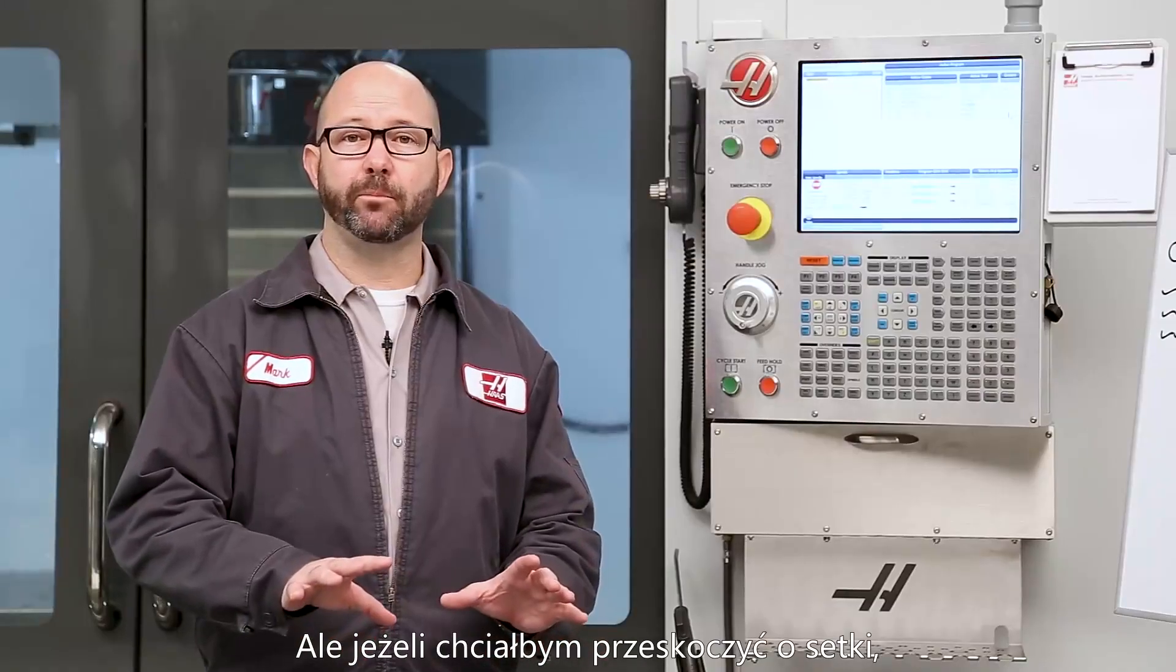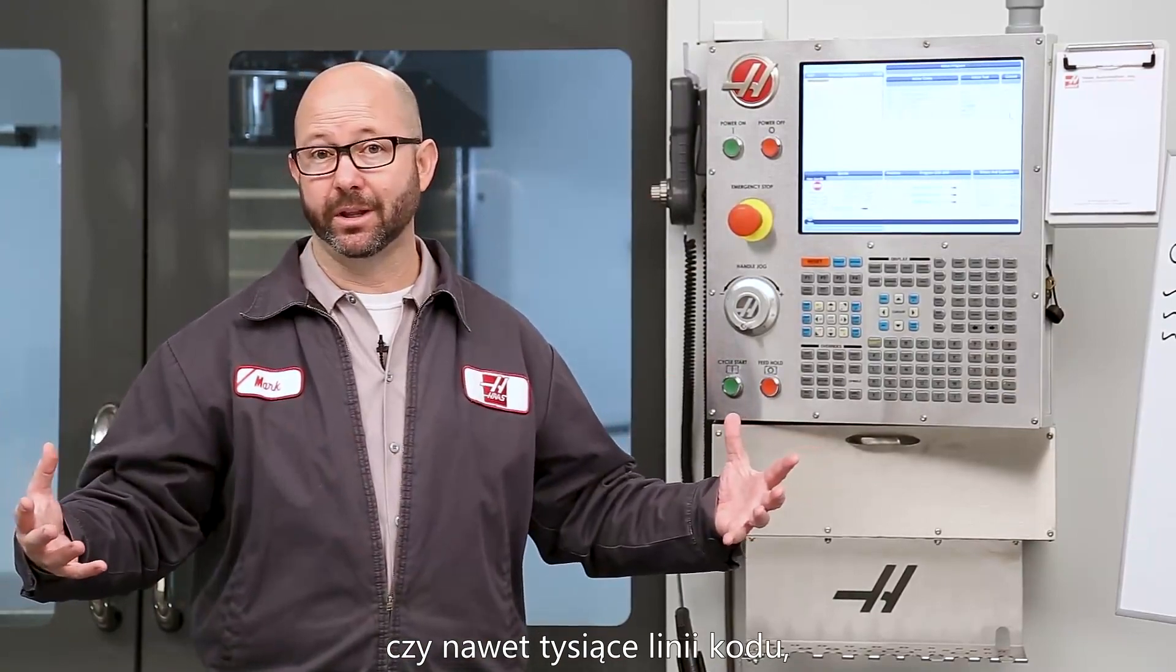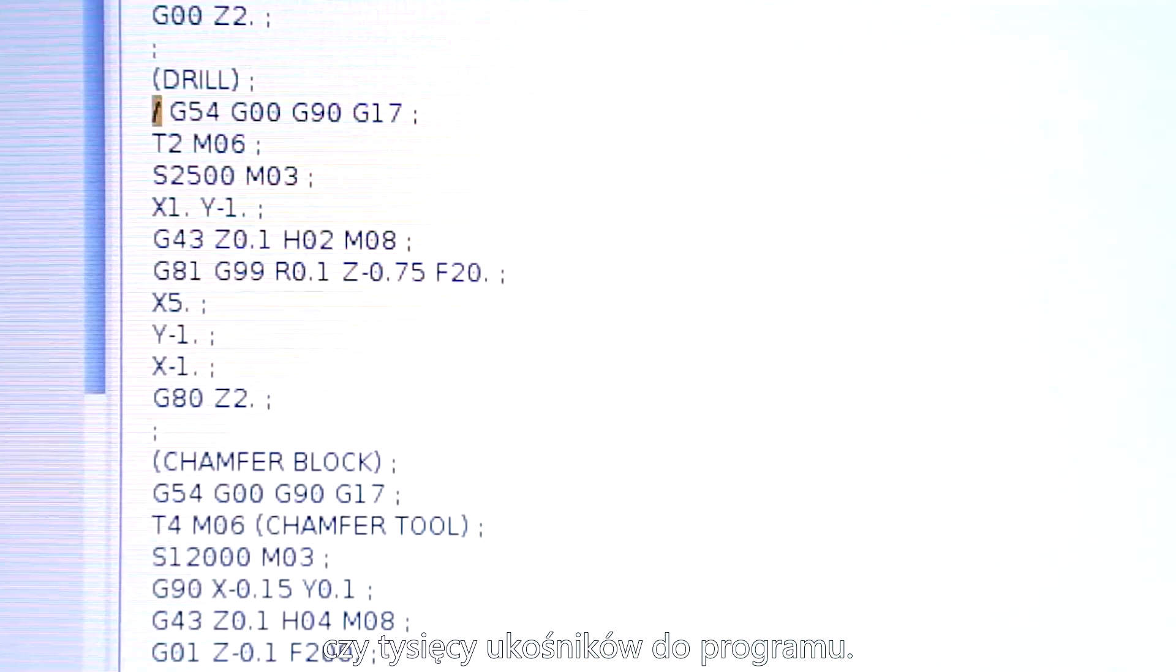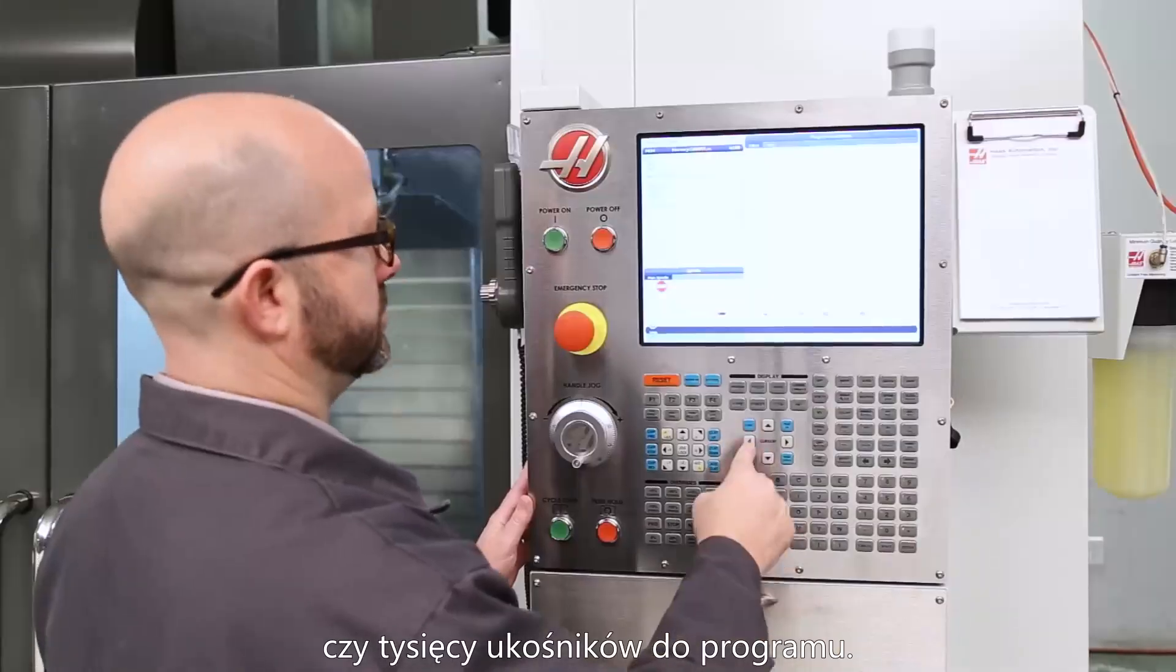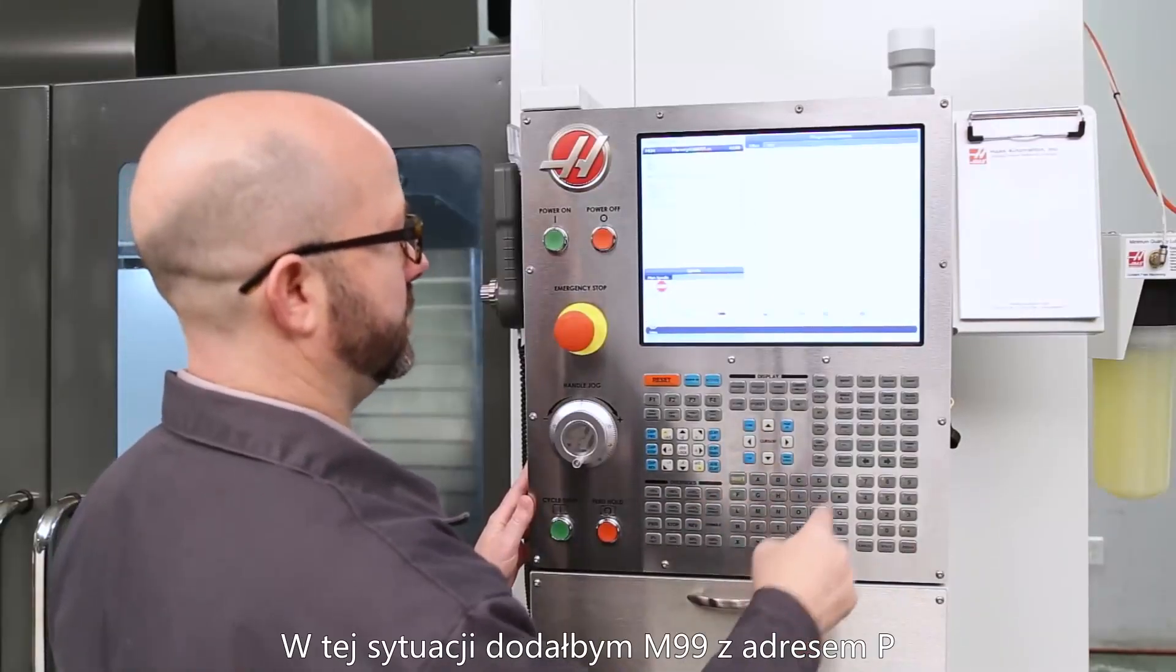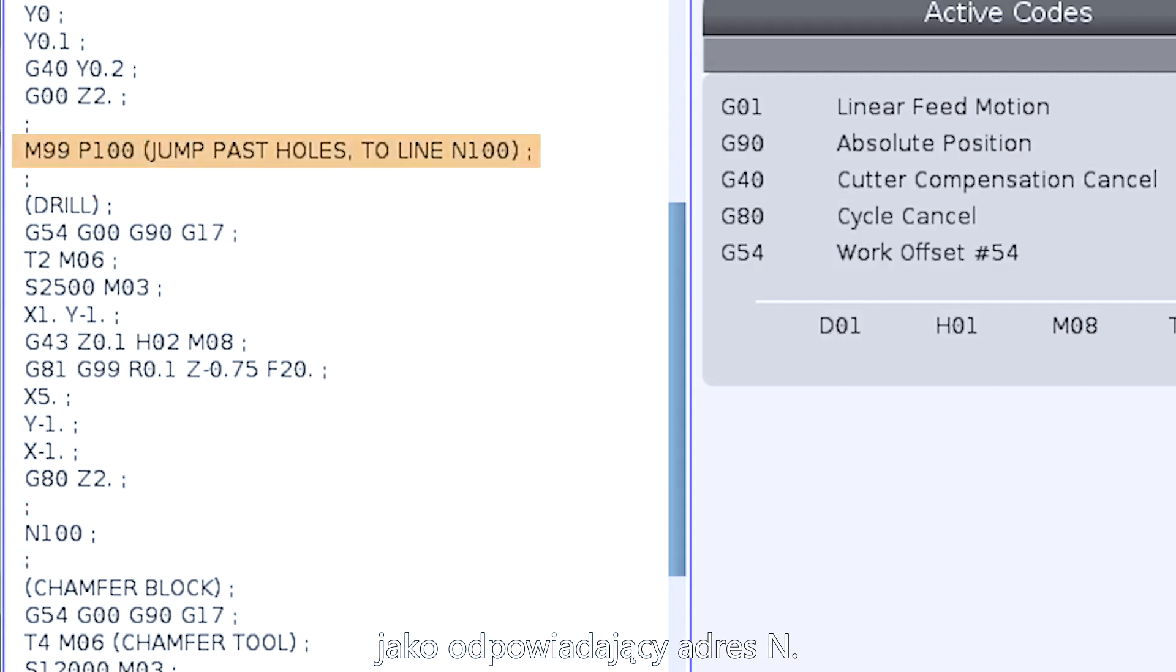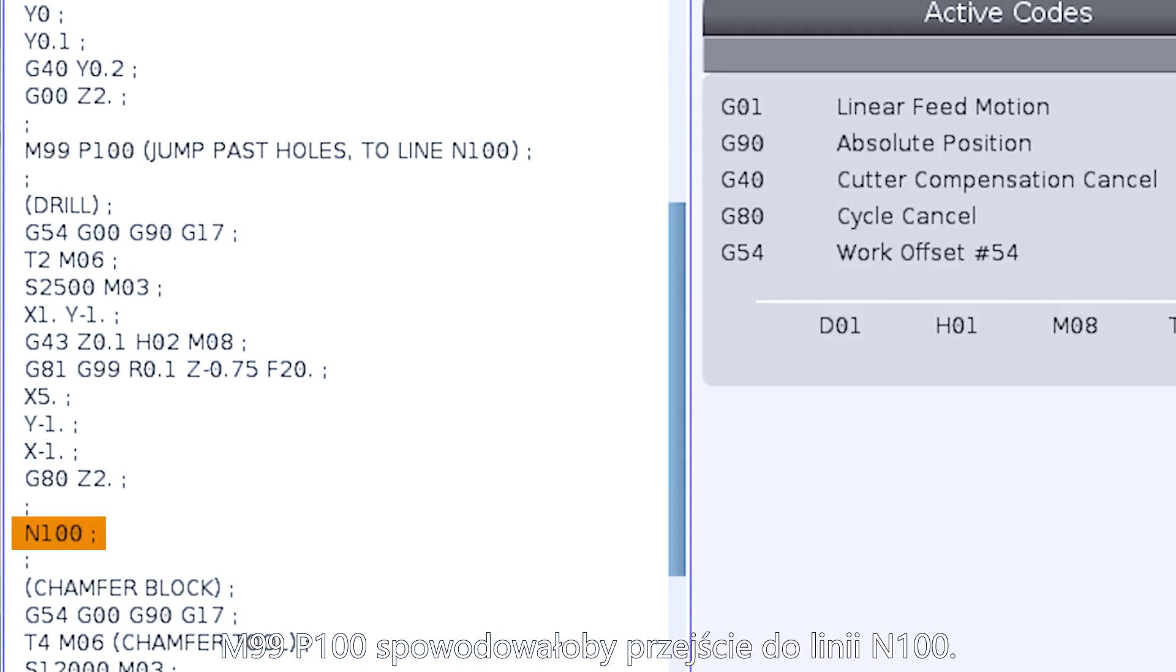If I wanted to jump over hundreds or even thousands of lines of code, I wouldn't want to spend the time to add hundreds or thousands of forward slashes to my program. That would take a long time. In that case, I'd add an M99 with a P number and label the line I'd like to jump to with a corresponding N number. M99 P100 would then jump to my line N100.